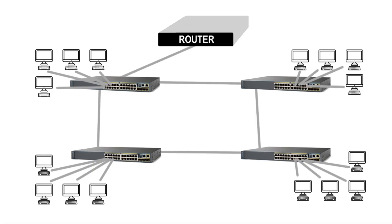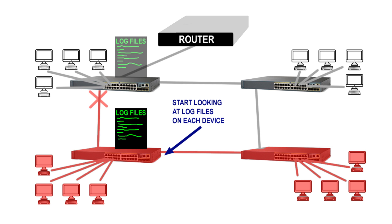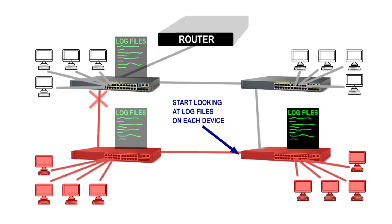When a computer network goes down or stops functioning, the first step in troubleshooting is to start checking log files on any or all devices that are around the problem area. After some initial triage troubleshooting to determine if the problem is localized — is it in a certain building, a certain connection, a specific area of the campus — you want to go to those devices. For example, if a connection between two buildings stopped working, look at the log files on the switches, routers, and other devices around that connection point.